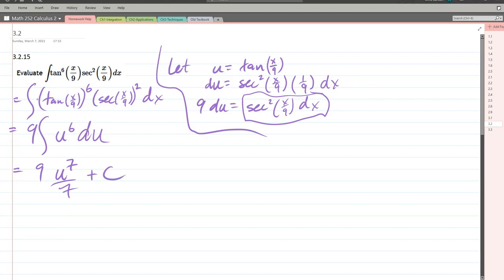We did not have any bounds, so this is plus a constant. We'll write it as 9/7. Now we have u to the seventh, so that's tangent. I'm writing it as tangent raised to the seventh power outside. You can of course write your seventh power inside if you want to, plus constant.